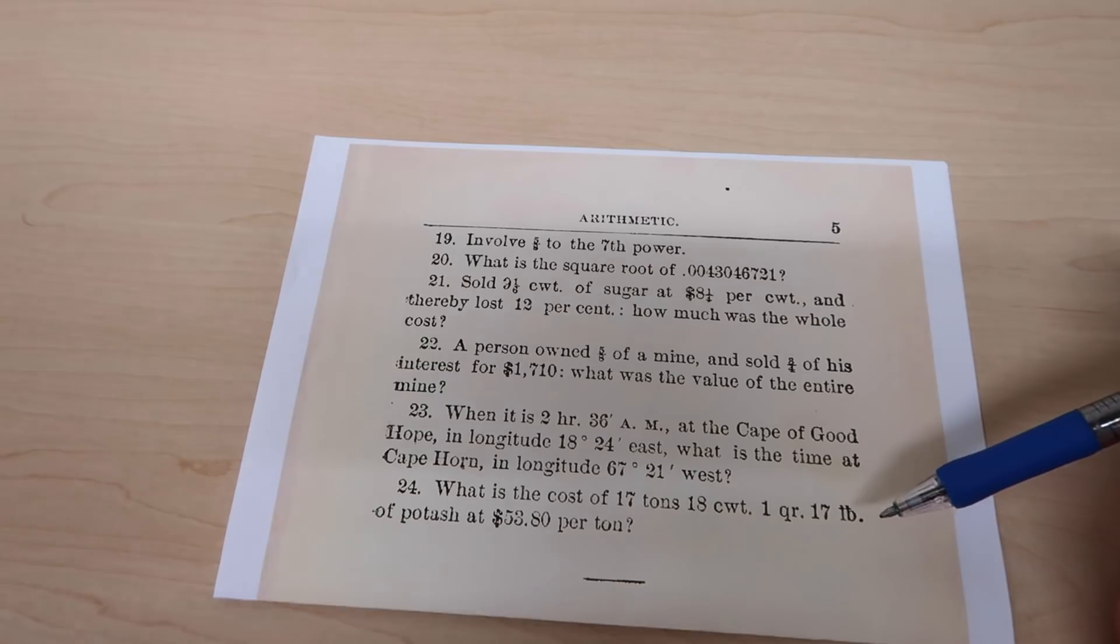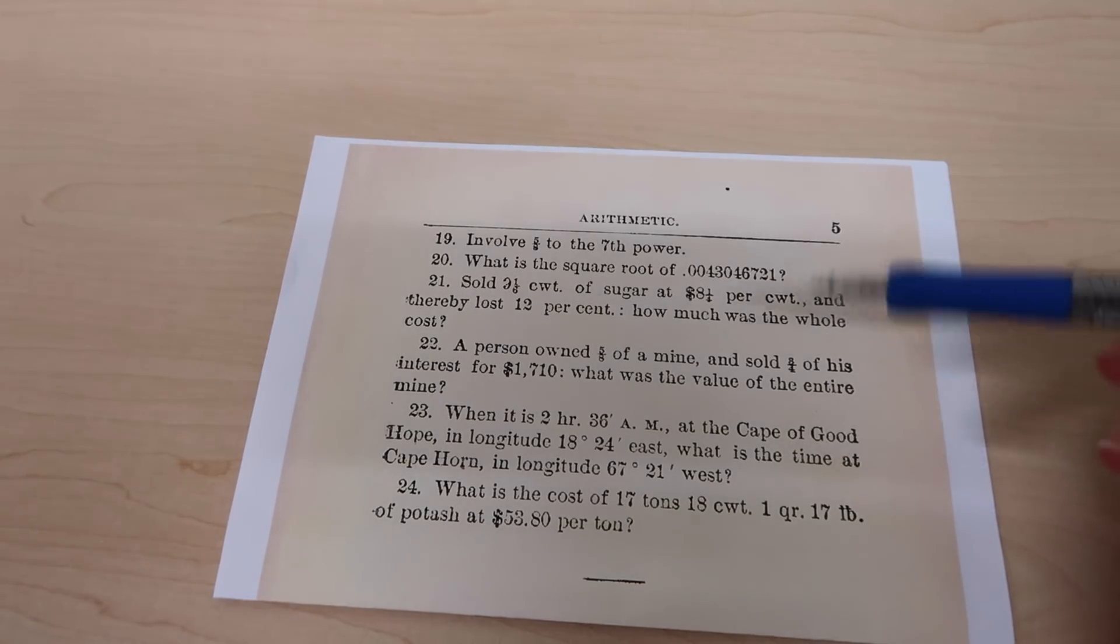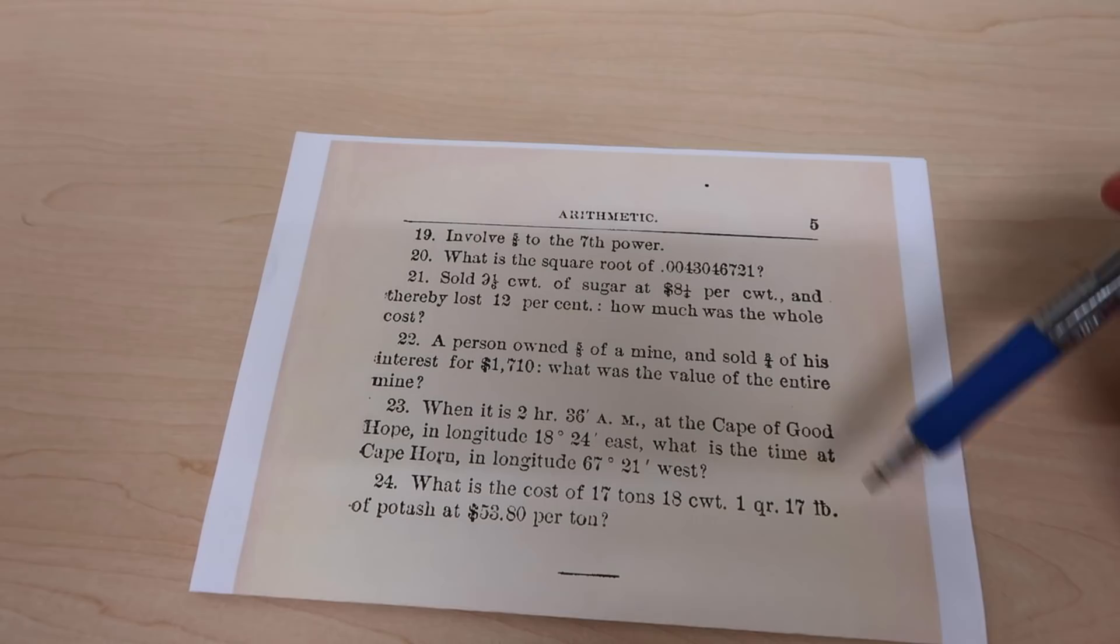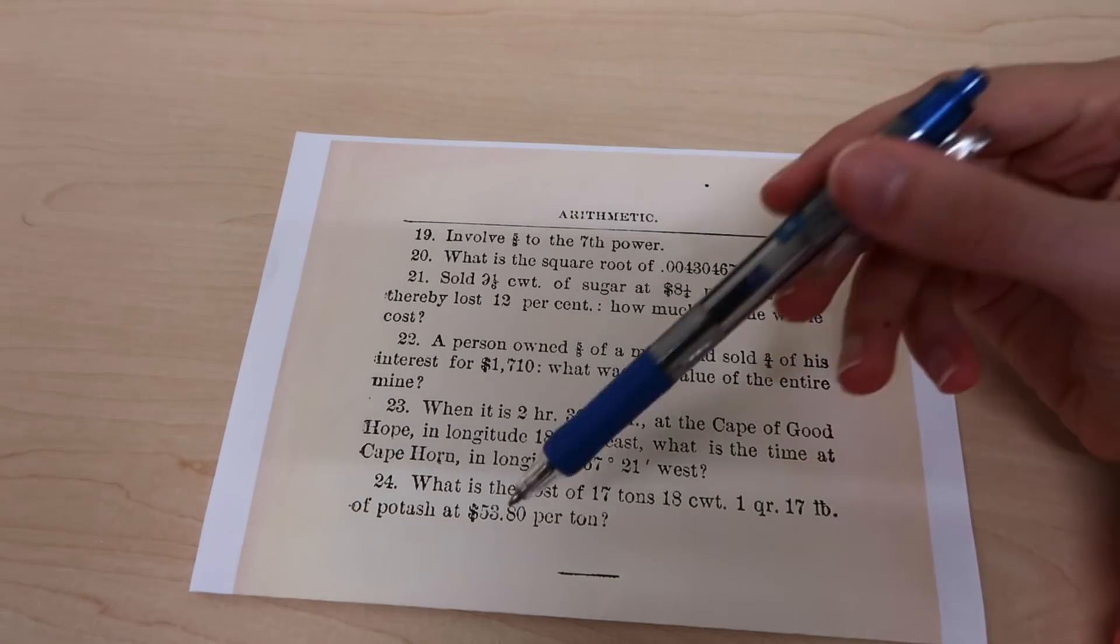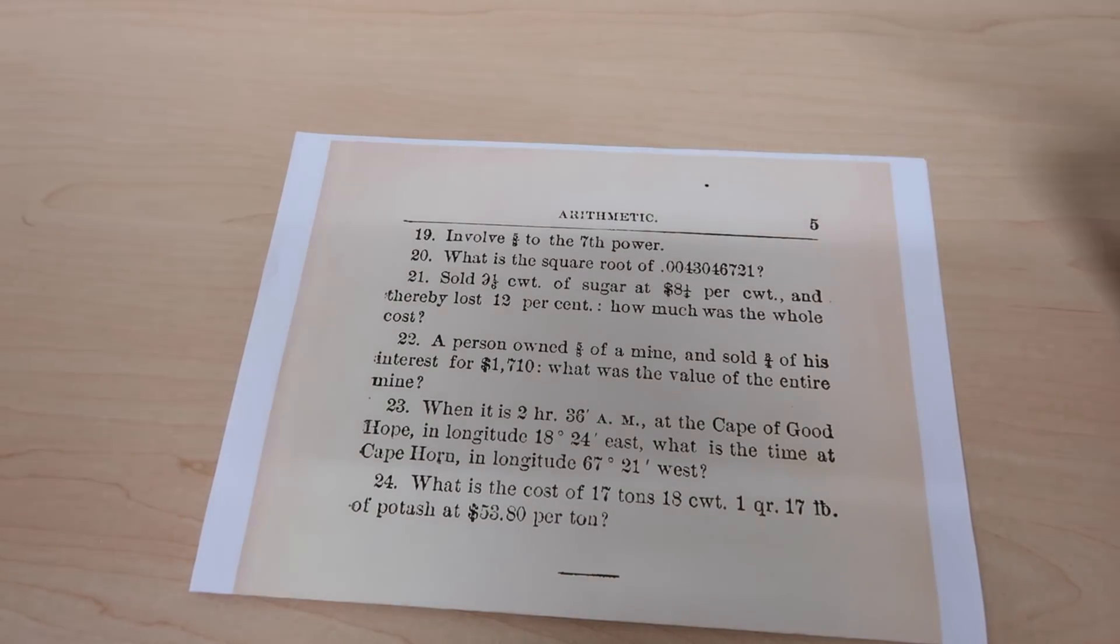And finally another question using several different units here which are not metric, which is, I mean that's why it's hard to start with. I guess converting it down into some unit that you choose and then dividing this price by that number. I don't know what potash is, but okay.